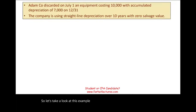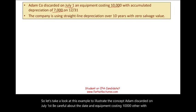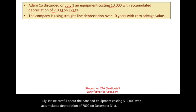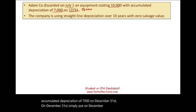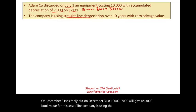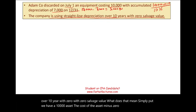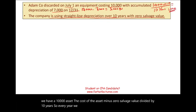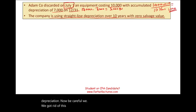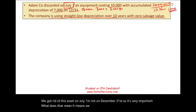Let's look at an example. Adam discarded on July 1st — be careful about the date — equipment costing $10,000 with accumulated depreciation of $7,000 as of December 31st, giving a book value of $3,000. The company uses straight-line depreciation over 10 years with zero salvage value, meaning $10,000 divided by 10 years equals $1,000 depreciation per year. Since the asset was discarded on July 1st, not December 31st, we must add another six months of depreciation.